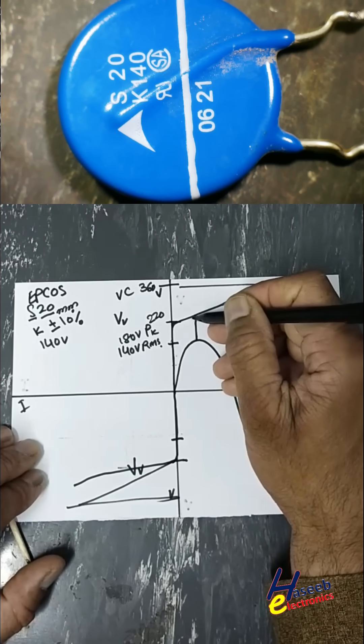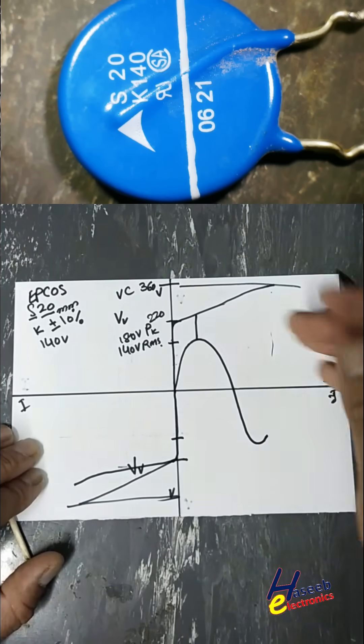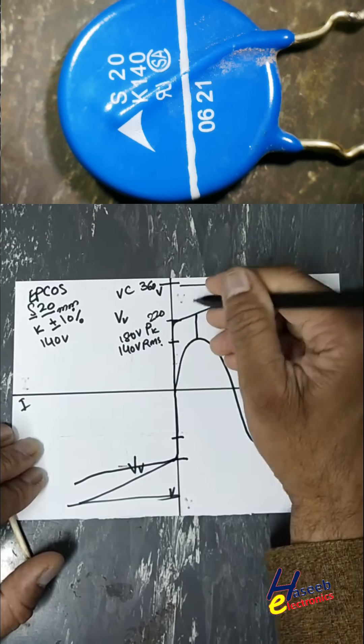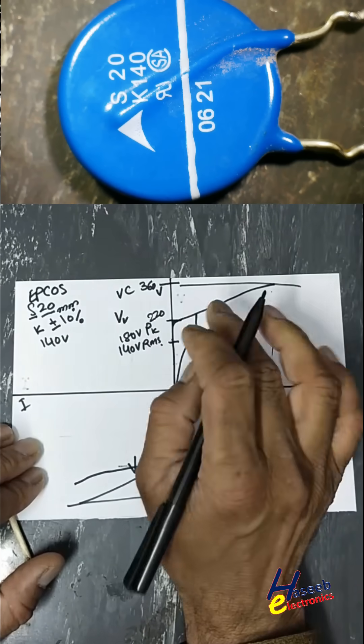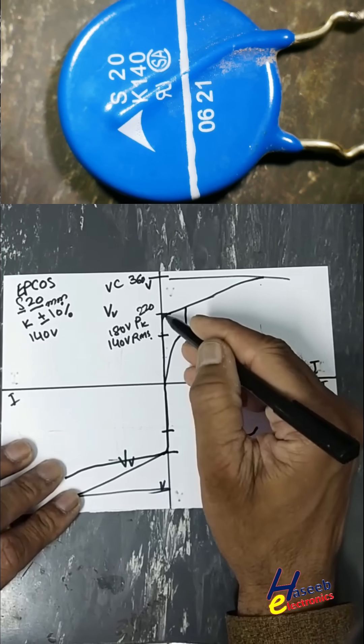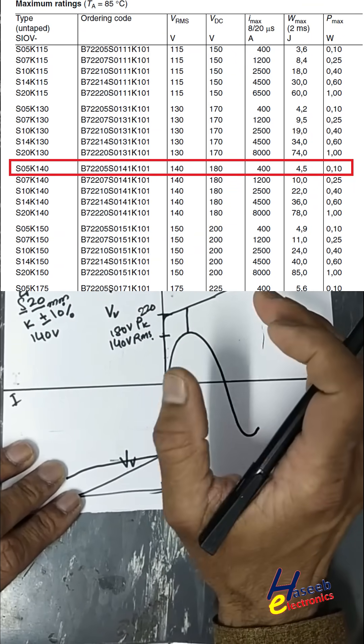If it is below 220 volts, the system will remain protected. When voltage starts to increase, it will clamp that peak so the system remains protected. After this point, its resistance will decrease non-linearly.